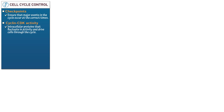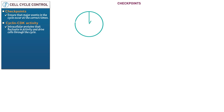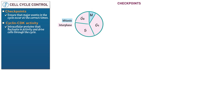Now let's illustrate them both. We'll start with checkpoints. Draw a pie chart to represent the cell cycle. Demarcate the following periods in interphase: G1, S, and G2. Finally, demarcate the M phase — mitosis. We leave out its discrete phases for clarity.